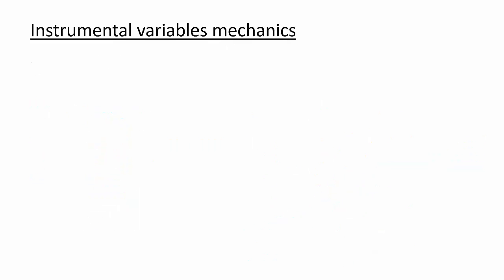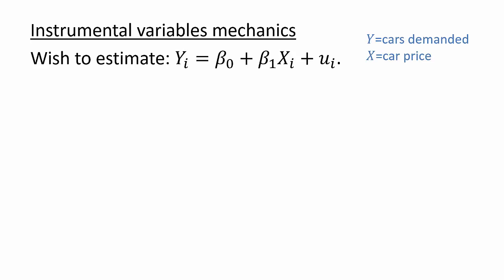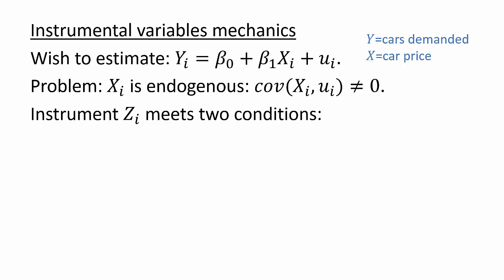Let's now formalize this idea. We would like to estimate a regression model like this one. For us, y is the quantity of cars demanded, and x is the price of a car. The problem is that our independent variable x is endogenous, in our case due to simultaneity bias. To use this technique, we need data on an instrumental variable, also called an instrument. That instrument, typically denoted as z, must meet two conditions.